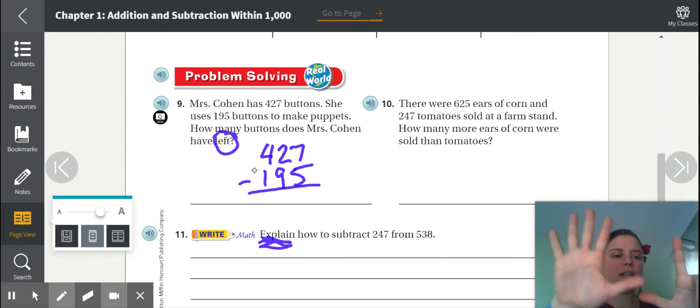Now can you take 5 away from 7? Totally. That is what? It is 2. All right. Can you take 9 away from 2? Nope. So what do you gotta do? You gotta go next door and borrow 10 more.